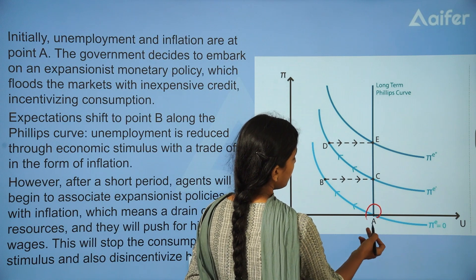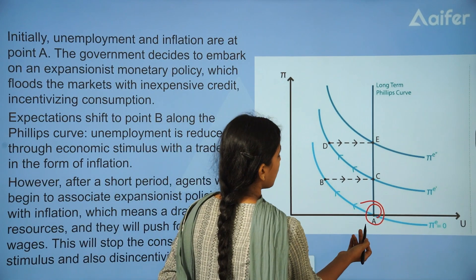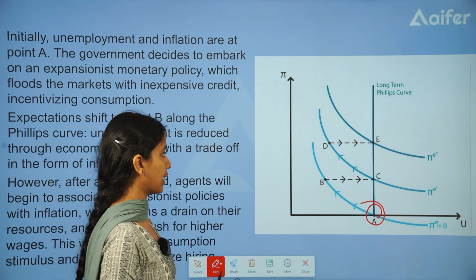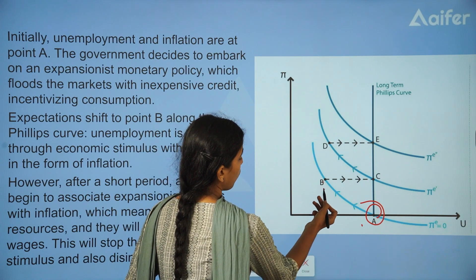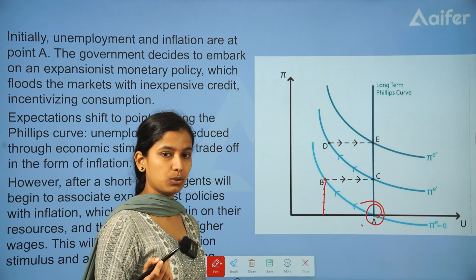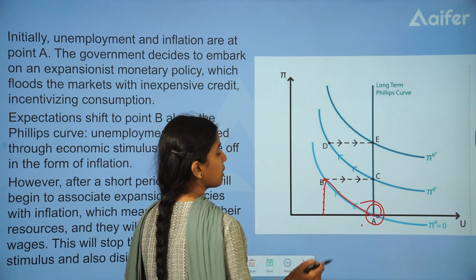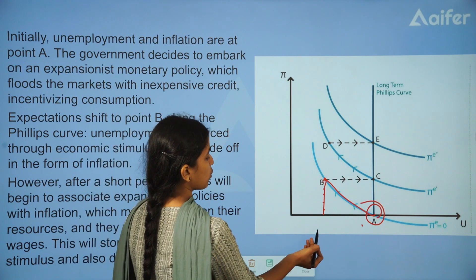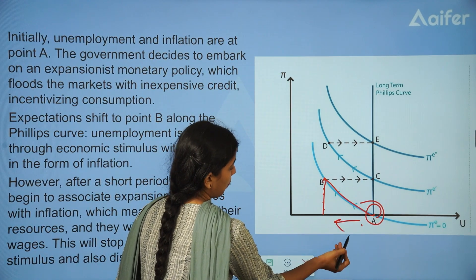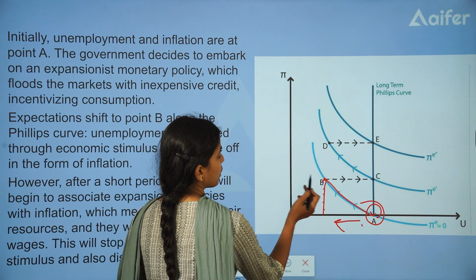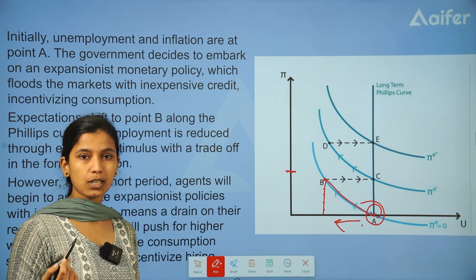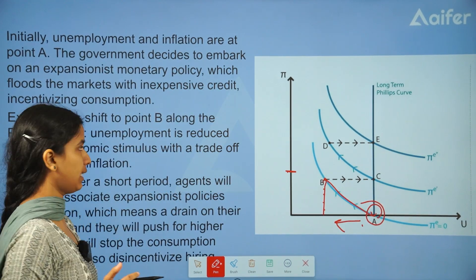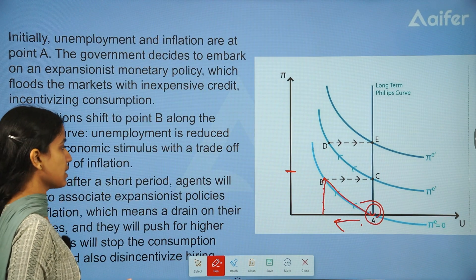Let's start here. The initial point is A. Point A is where the government targets unemployment. Unemployment is measured and inflation is measured. There is an expansionary fiscal policy that shifts point A — point A will be shifted to point B along this short-run Phillips Curve. Unemployment risk is reduced through economic stimulus — that's the expansionary monetary policy.